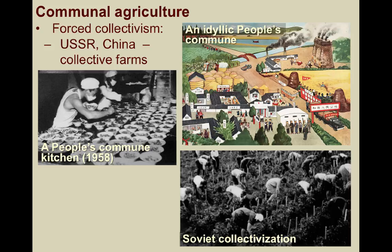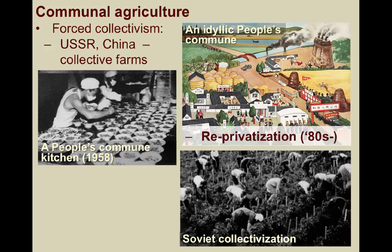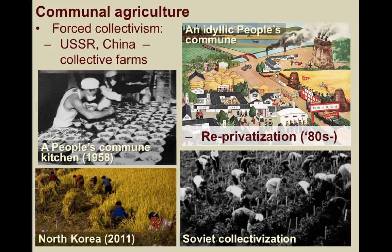China engaged in mass collectivism from 1958 up through the 1980s. The government displaced millions of rural people and forced them to live in communes made up of thousands of families but retained no private property. The results were similar to that of the Soviet Union, and famines ensued. Farming reprivatization in both countries has occurred since the 1980s, and the Soviet Union collapsed in 1992. Today, North Korea is still a stronghold of communal agriculture and remains the least free state in the world, requiring massive imports of grain and other foodstuffs to survive, often coming from China.